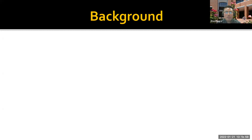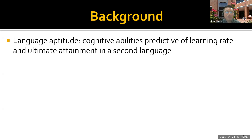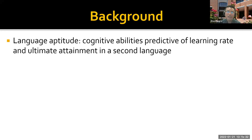Given that the topic is implicit language aptitude, I'd like to start by providing some background information. Language aptitude refers to a set of cognitive abilities which are predictive of learning rate and ultimate attainment in the second language. Those with stronger aptitude learn faster, and they are more likely to achieve native-like proficiency — basically, it refers to intelligence for language learning, which is different from general intelligence.